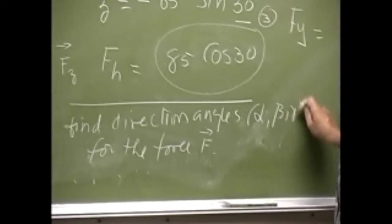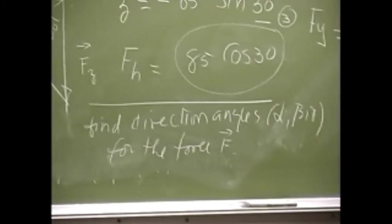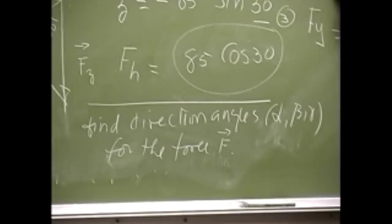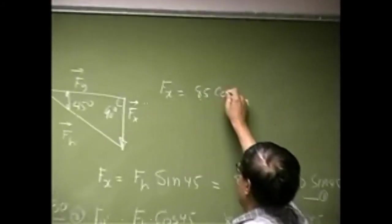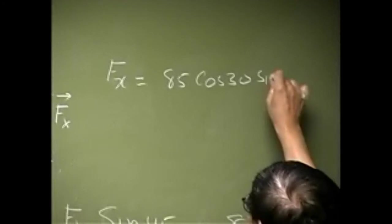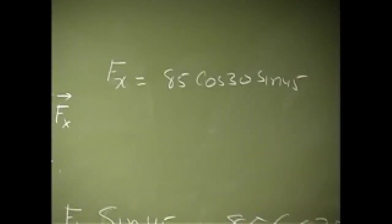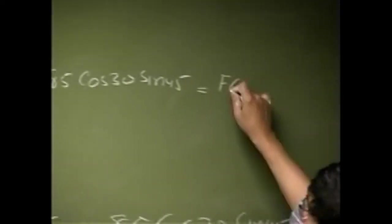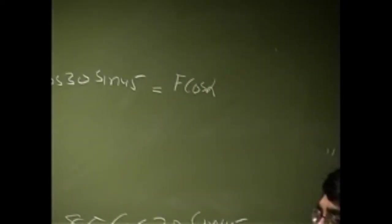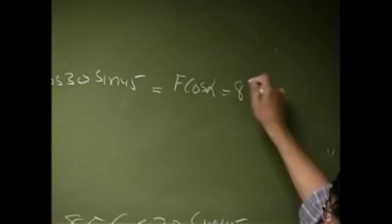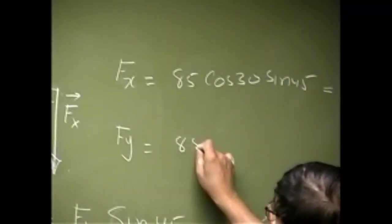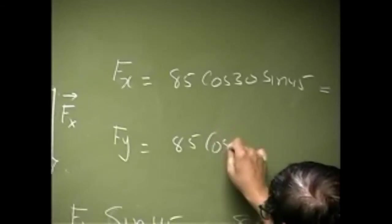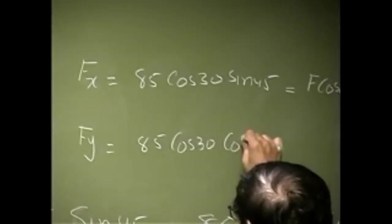Which means you're looking at the angles alpha, beta, and gamma. And it's not that hard to find those, because if I look at the result, Fx came out to be 85 cosine 30 sine 45.